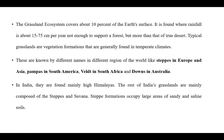Grasslands are known by different names in different regions of the world: steppes in Europe and Asia, pampas in South America, veld in South Africa, and downs in Australia. In India, they are found mainly in the high Himalayas; the rest of India's grasslands are mainly composed of steppe and savannah kind of grassland ecosystems, occupying large areas of sandy and saline soils.